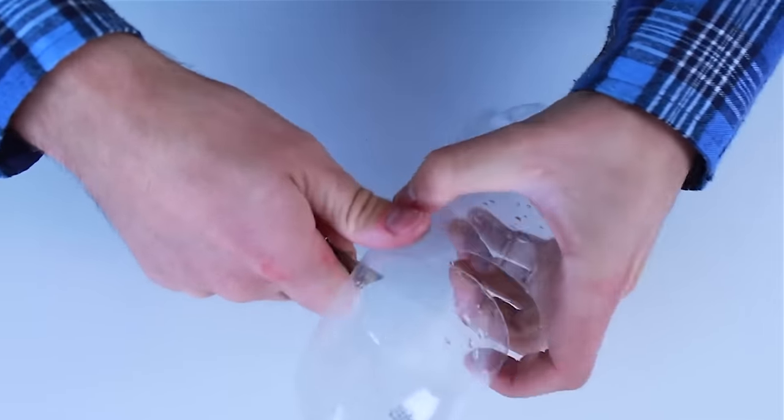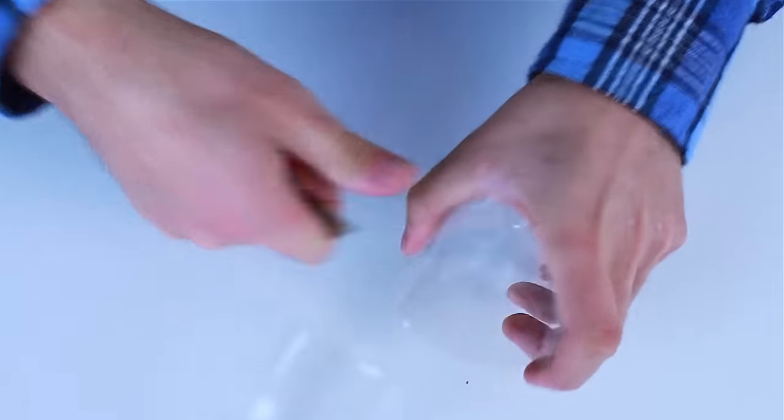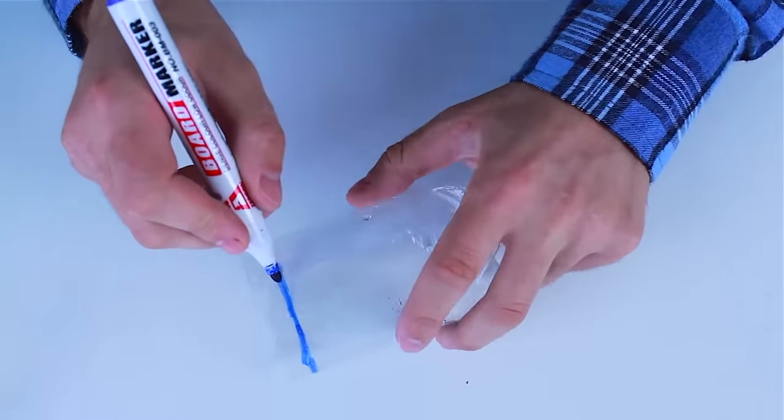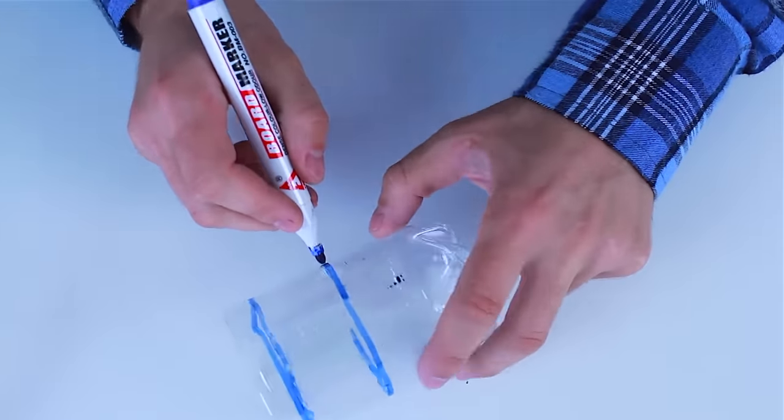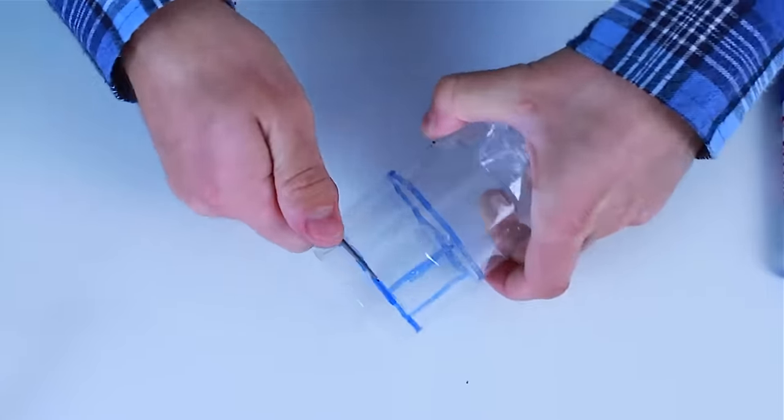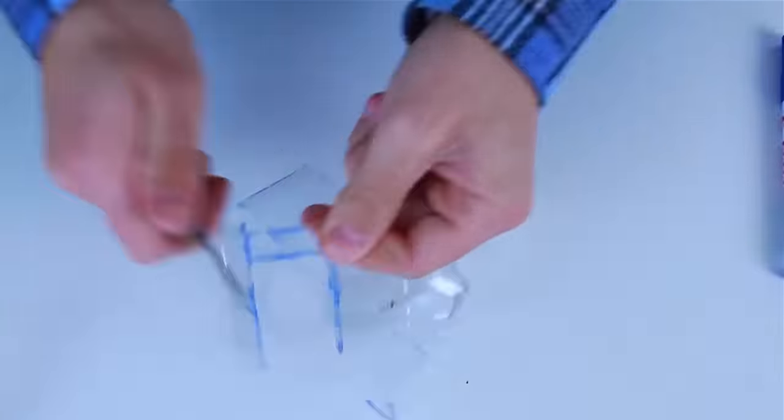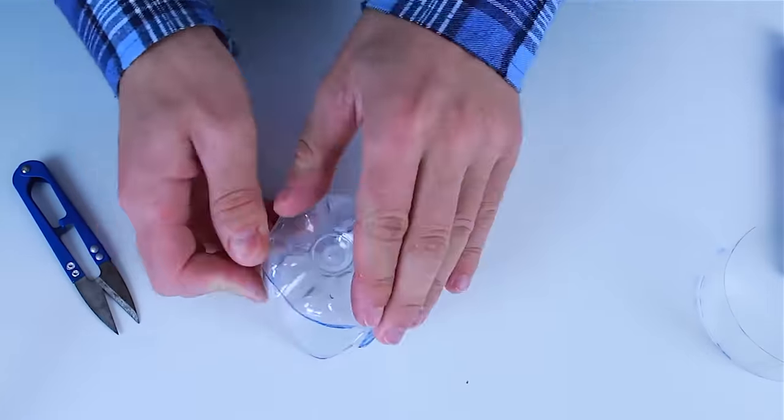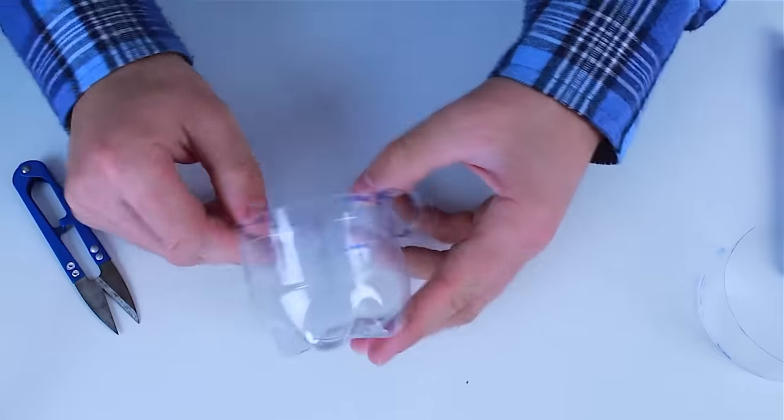Because now we are going to make a simple cup with a handle from a plastic bottle. Cut the bottle into pieces, draw two lines around and leave a small partition between them, about 2 cm in width. Then we cut it out carefully and pass it from the bottom. Our cup is ready!